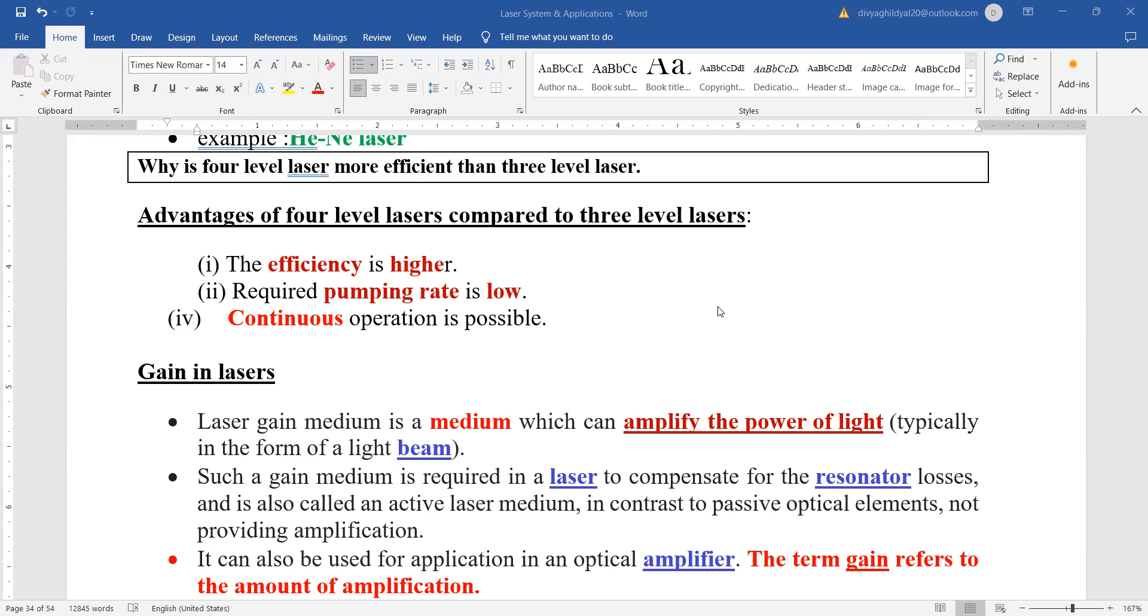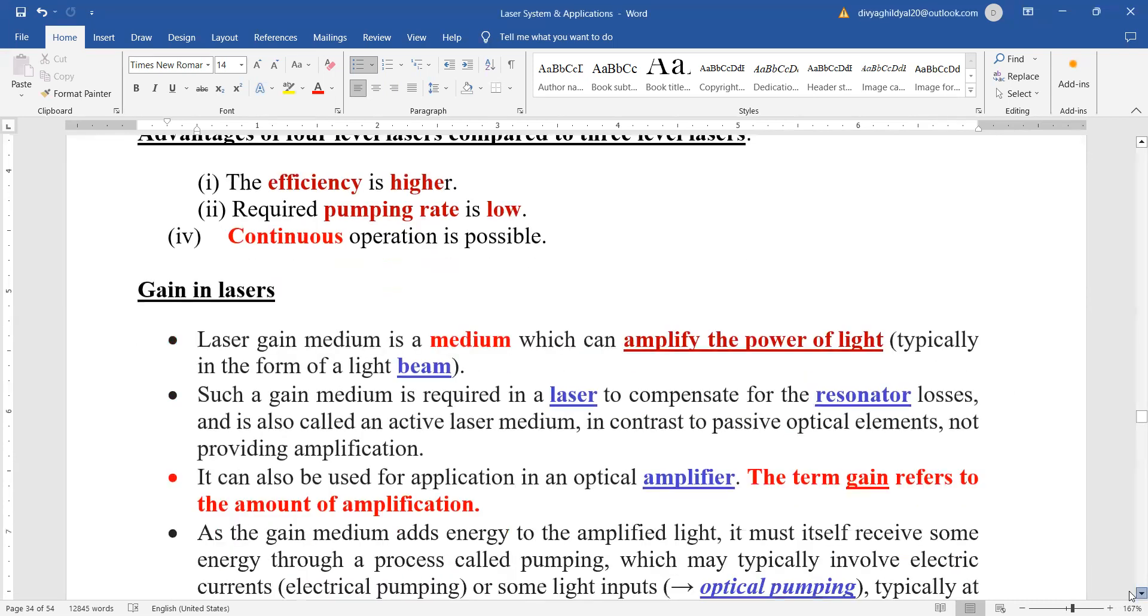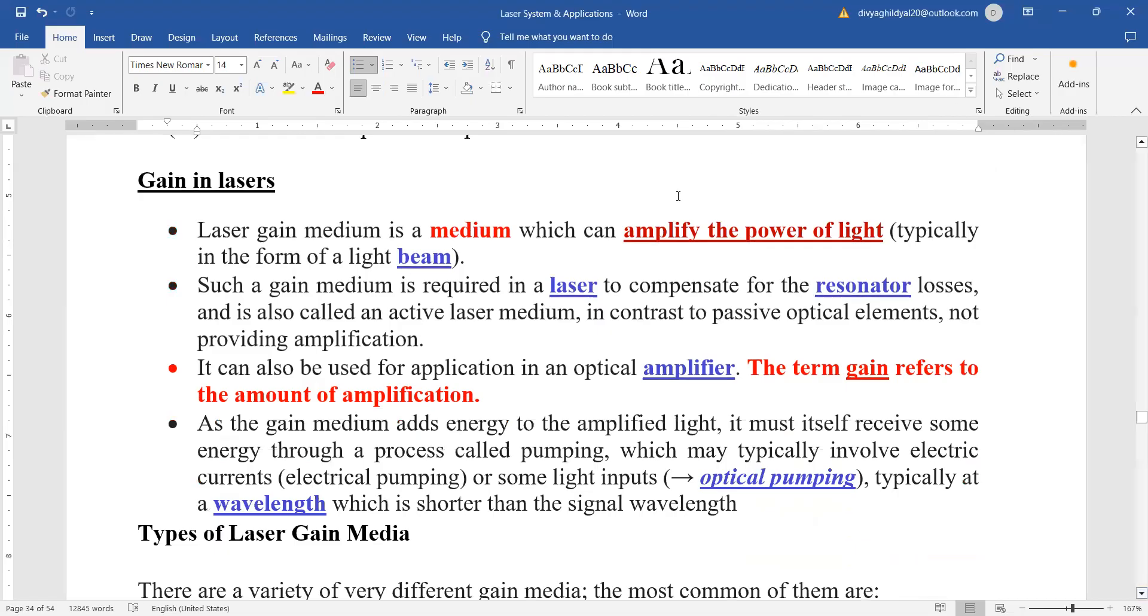Gain in lasers. What do you mean by the word gain? Common English term, it means that output is greater than the input. Laser gain medium is a medium which can amplify the power of light, typically in the form of a light beam. Such a gain medium is required in the laser to compensate for the losses in the resonator through which the light has passed.